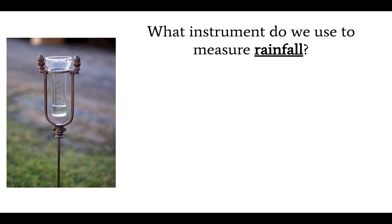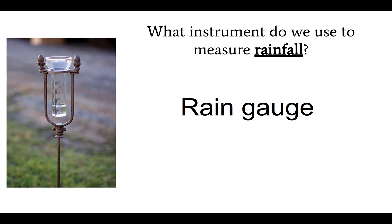What instrument do we use to measure rainfall? The instrument is called a rain gauge. As you can see, it's basically a cup that sits outside and has those little markings on the side that allows us to measure precisely how much water is in the cup.